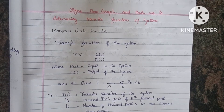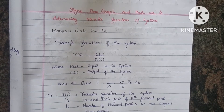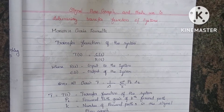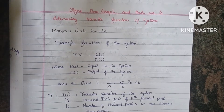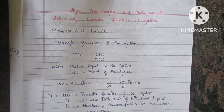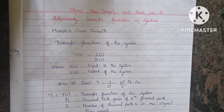T is the transfer function of the system. Delta is defined as 1 minus the sum of individual loop gains, plus the sum of gains of products of all possible combinations of two non-touching loops.